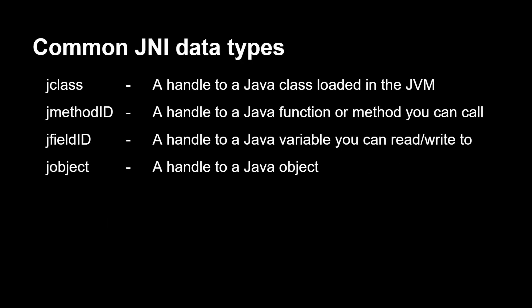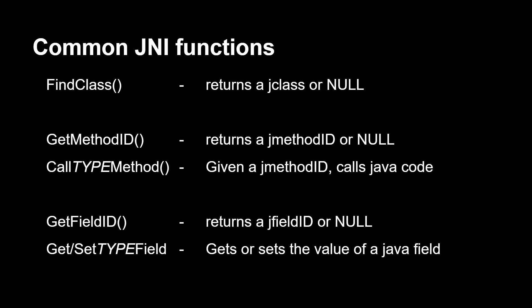Some common JNI data types you'll always be using are: jclass, jmethodID, jfield, and jobject. For common JNI functions, there's FindClass which returns a jclass, GetMethodID which returns a jmethodID, and GetFieldID which returns a jfieldID. There are also functions to actually use these fields.